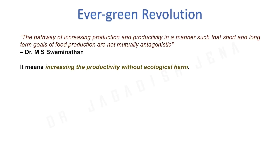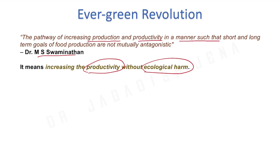What is the Evergreen Revolution? It means increasing productivity without ecological harm — that is the basic concept of sustainable agriculture. Dr. MS Swaminathan first introduced this term. According to him, the pathway of increasing production and productivity in a manner such that short and long-term goals of food production are not mutually antagonistic.